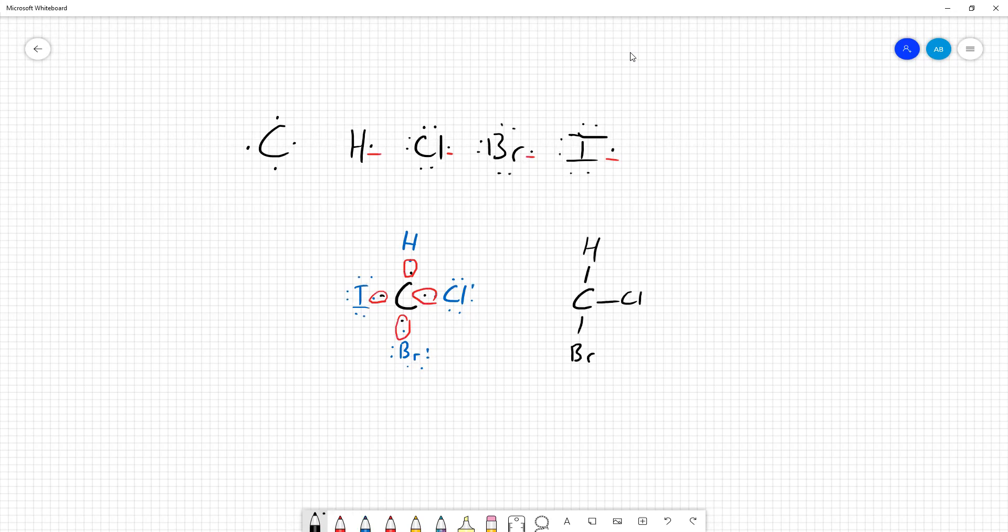All right, we have a single bond between carbon and each of the halogens. Each of the halogens would have three lone pairs around it. And then hydrogen, of course, just has a single bond to it.